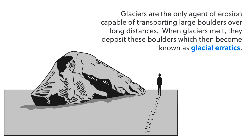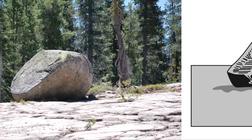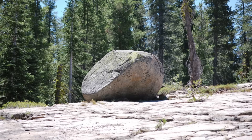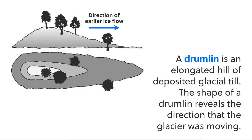That's because running water or wind are not capable of moving such large sediments. Here's a glacial erratic, and here's what they look like in reality. The only way these sediments could have gotten there is by being transported by a glacier, frozen in a large sheet of ice.